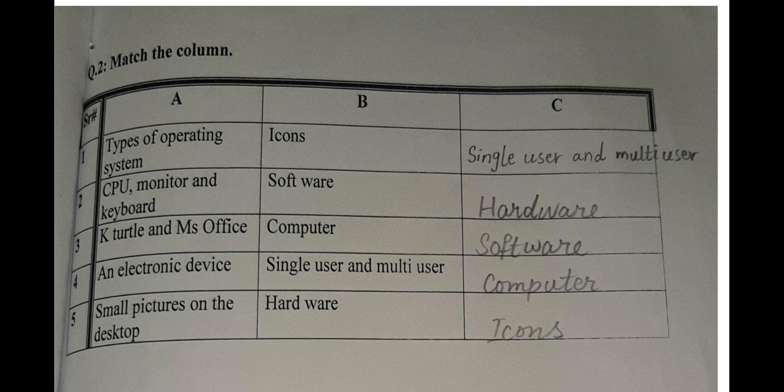Number two: CPU, monitor, and keyboard. You need to know these are the basic parts, physical parts. So we will define this as hardware. Number three: K Turtle and MS Office. These are shown on the computer screen, so they are software.